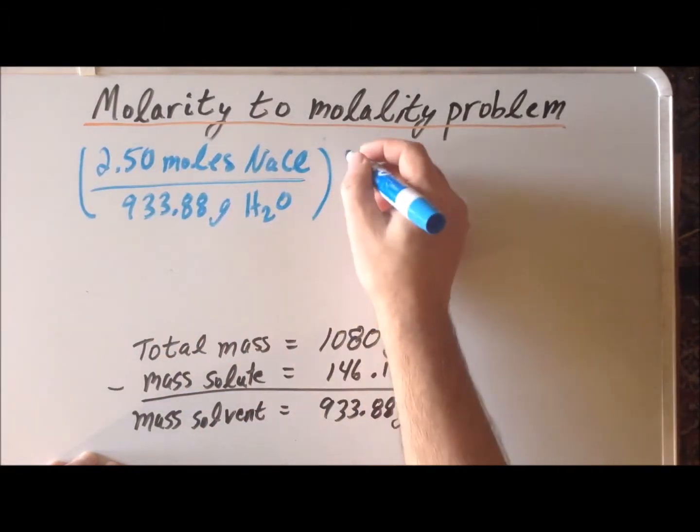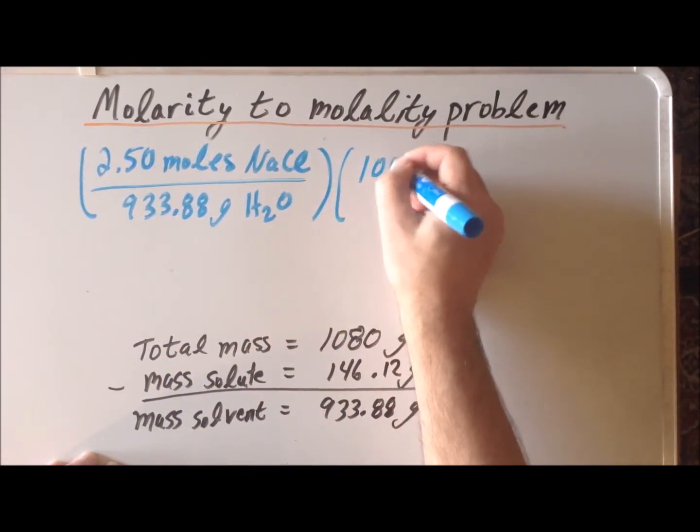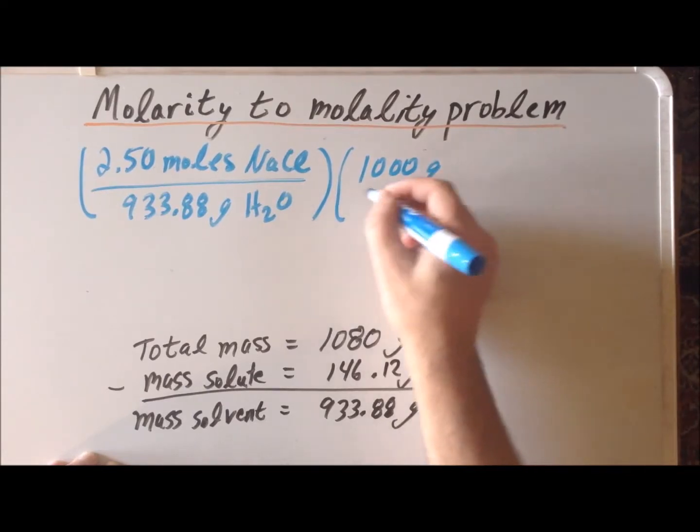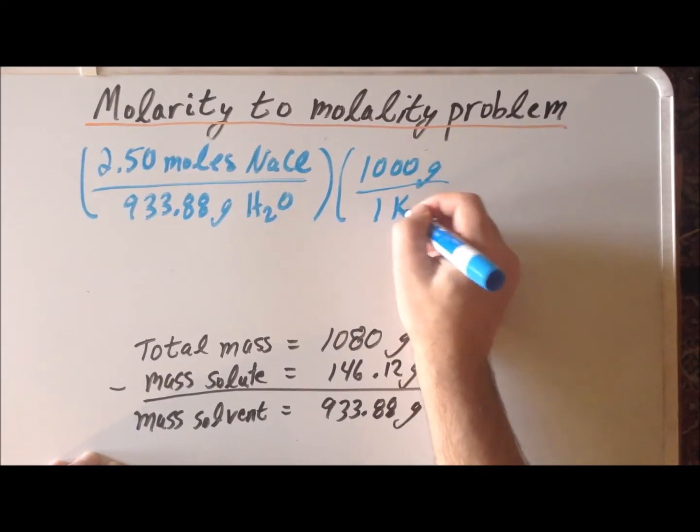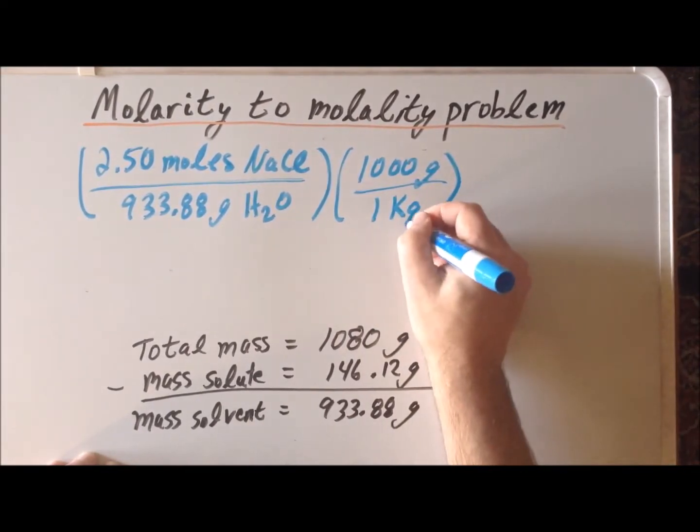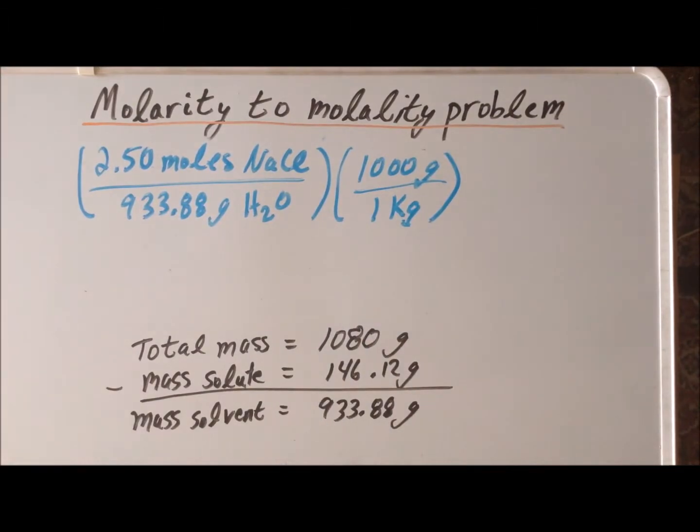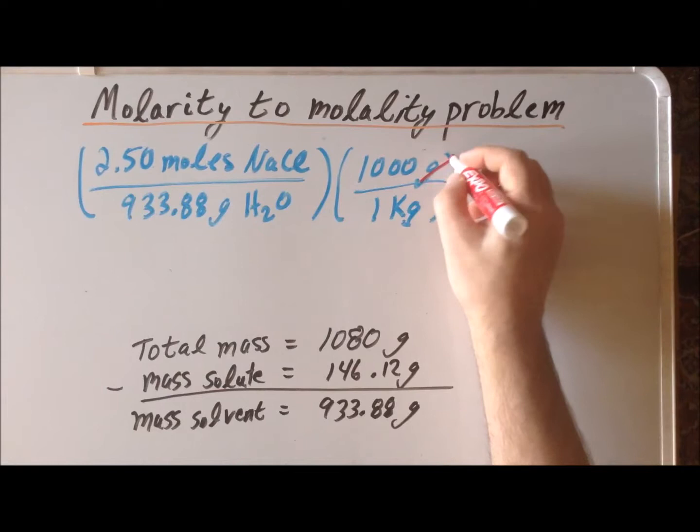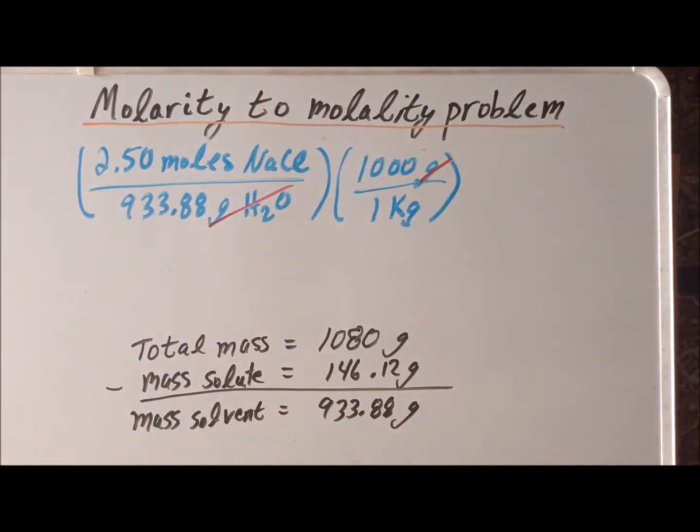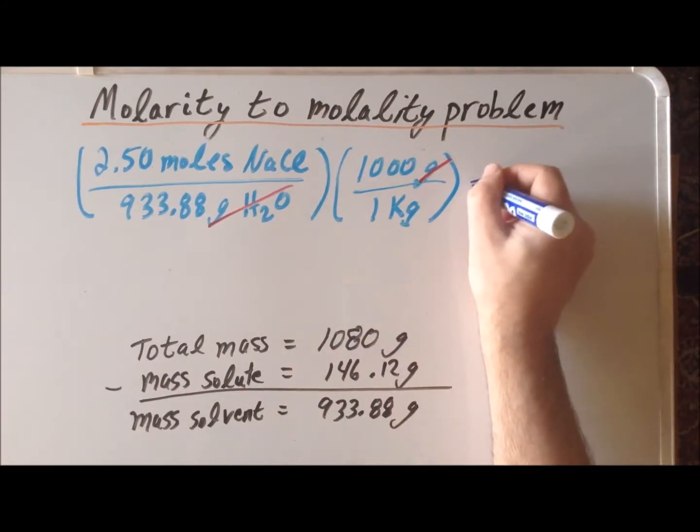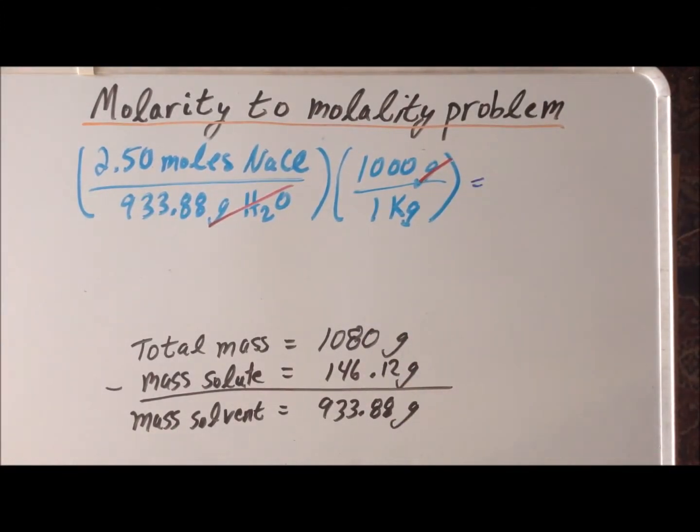And now we're going to use the fact that there are 1,000 grams in a kilogram of the solvent. So we notice that our units of grams are going to cancel, and we get a result in terms of the kilograms of the solvent.